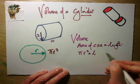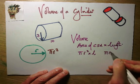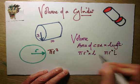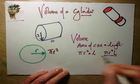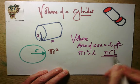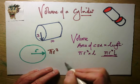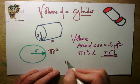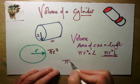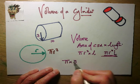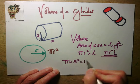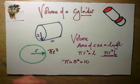We don't use the multiplication sign — we just call it pi r squared h, or l. Now let's apply that: pi, 3.14, times 3 squared, times 10.